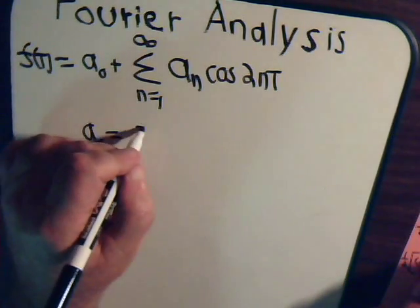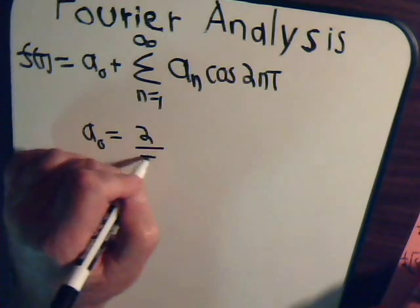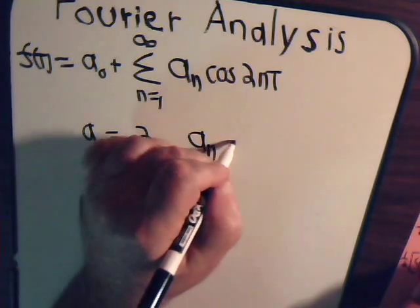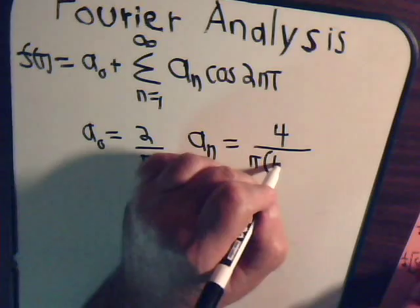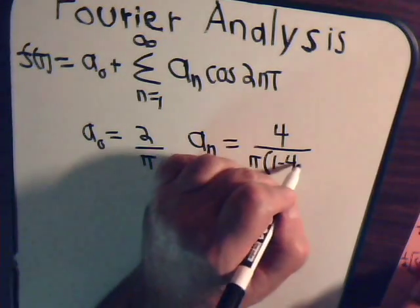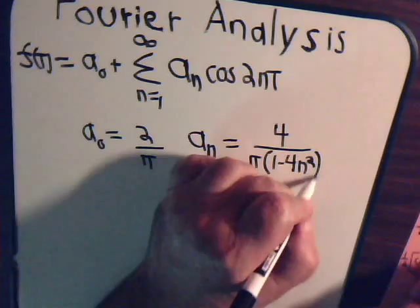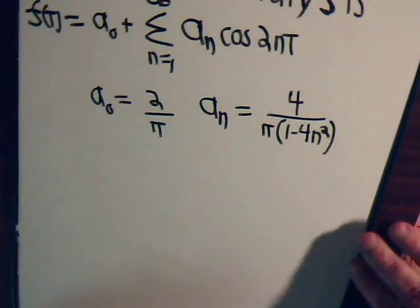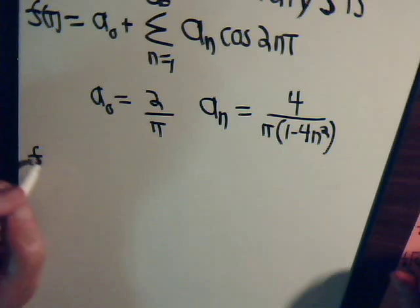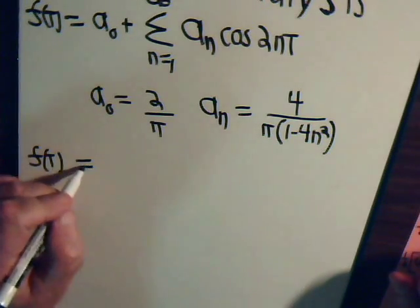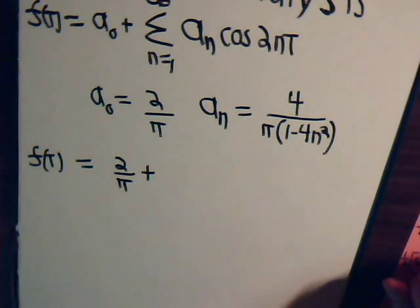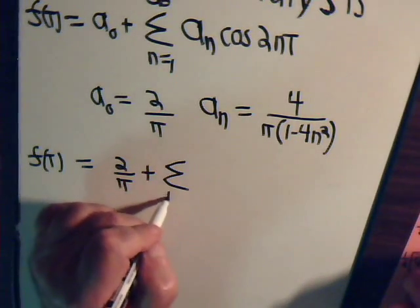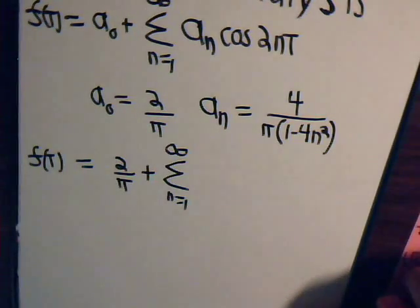A zero came out to be equal to two divided by pi. And a sub n, we determined that to be four divided by pi times one over one minus four n squared. So f of t equals two over pi plus the sum from n equals one to infinity.